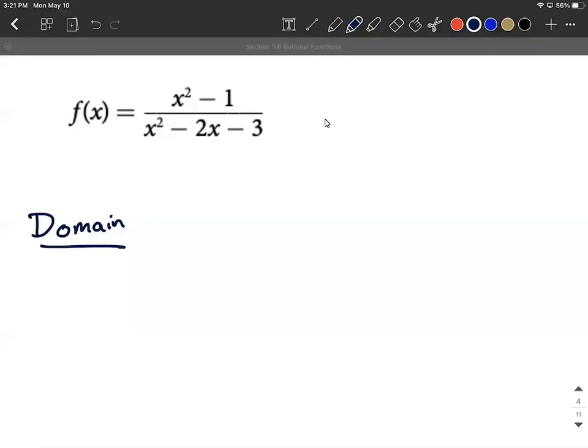Okay, we're given a rational function. We want to find the domain of this rational function as well as any discontinuities. Discontinuities could either be vertical asymptotes or holes in our graph. Removable discontinuities is what we say.